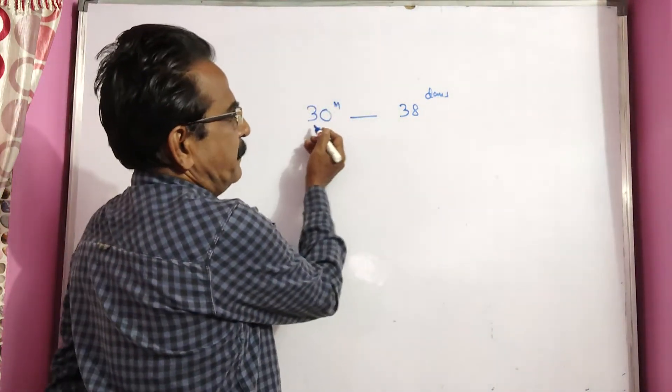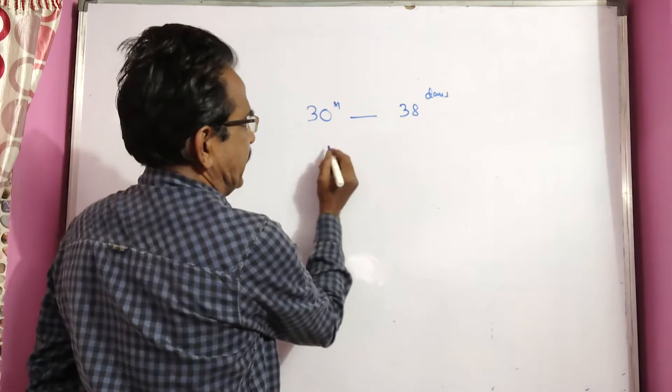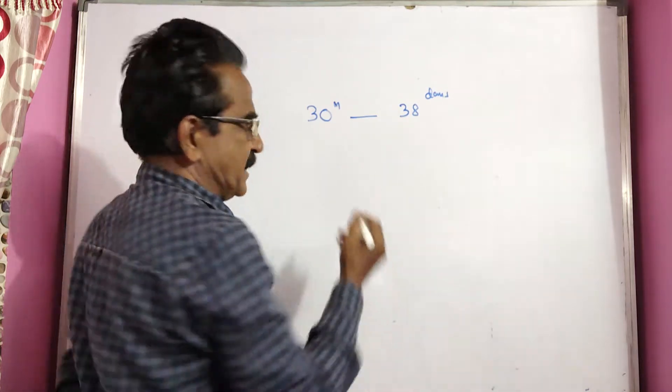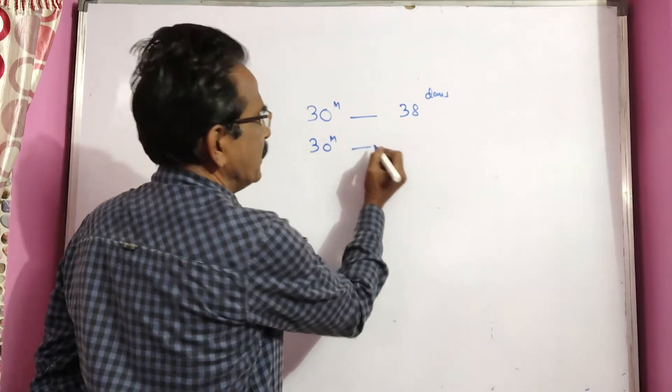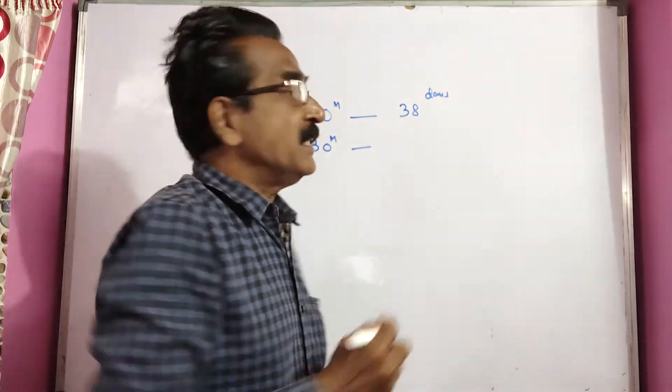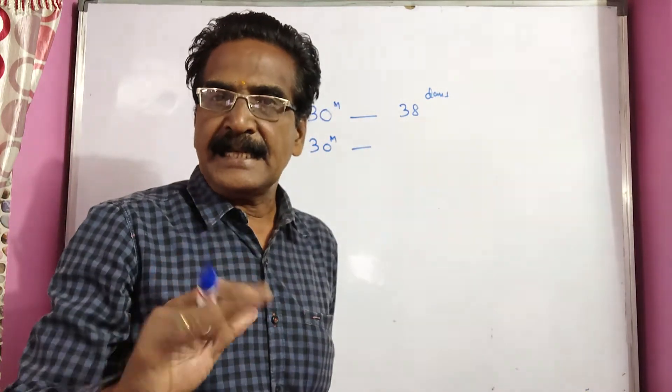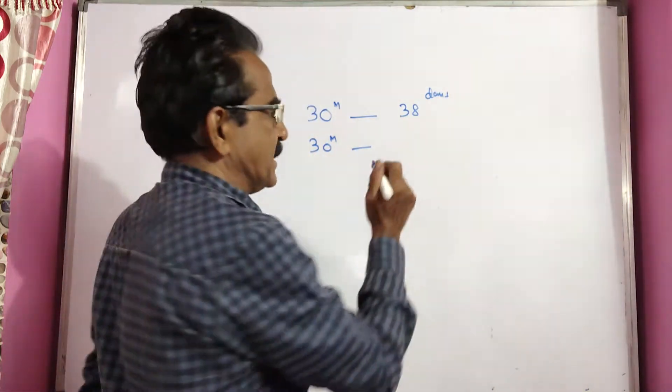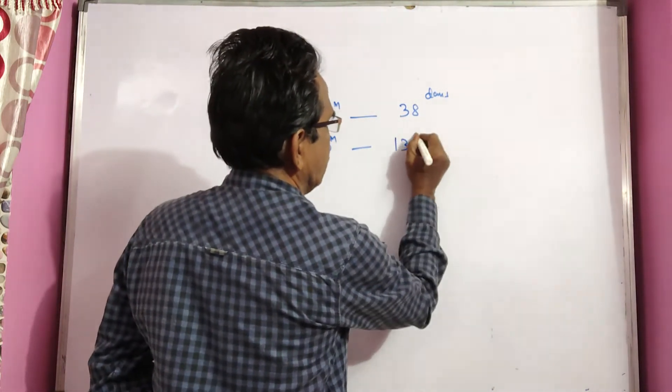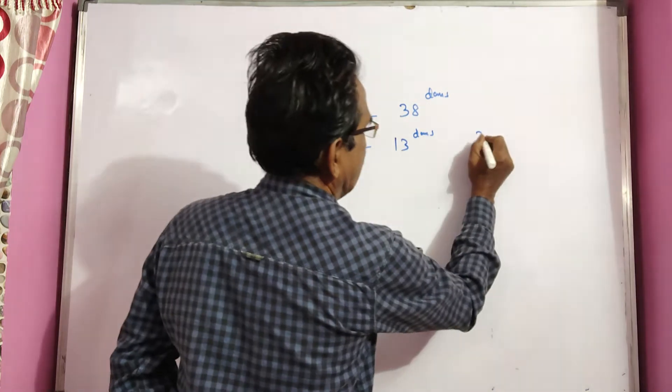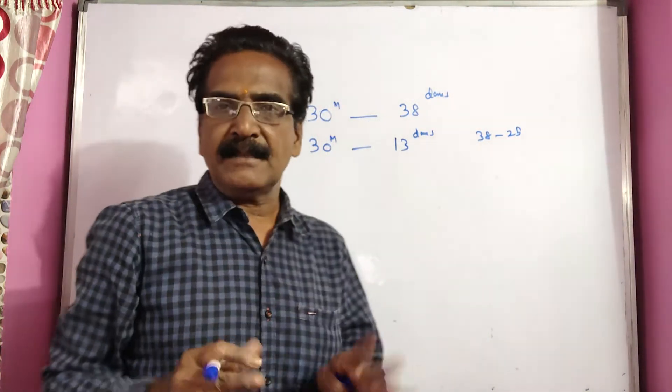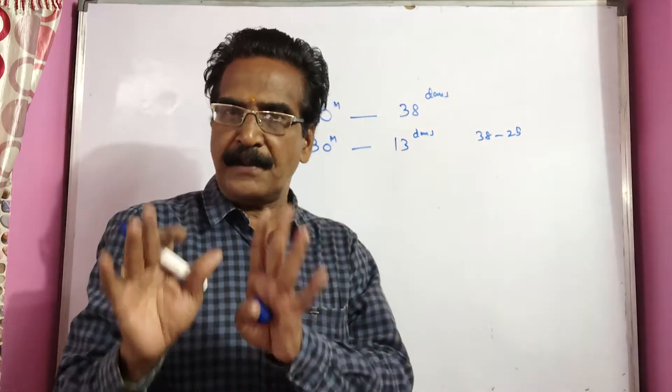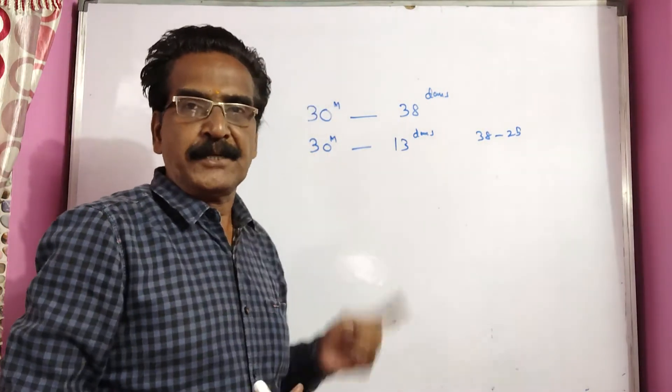See friends, 30 men can complete the work in 38 days. After 25 days, if these 30 men continue, the work will be completed in another 13 days, because 25 days they have worked. So in the remaining 13 days, the work would have been completed had these 30 men continue.